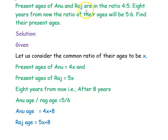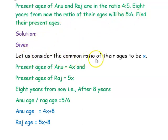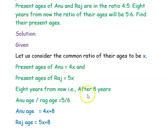Next question: the present ages of Anu and Raj are in the ratio 4:5. Eight years from now, the ratio of their ages will be 5:6. Find their present ages. Let the common ratio of their ages be x, so the present age of Anu is 4x and the present age of Raj is 5x. After 8 years, the ratio of Anu's age to Raj's age is 5/6.